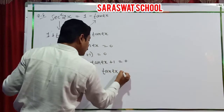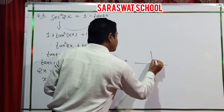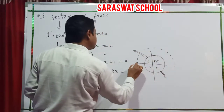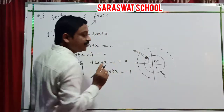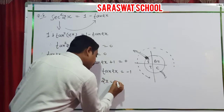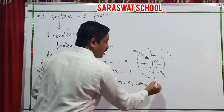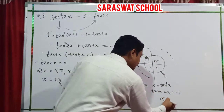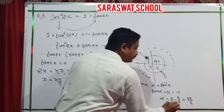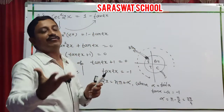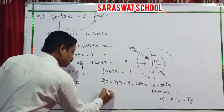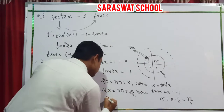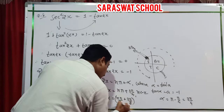For tan x equals minus 1: tan is negative in the second and fourth quadrants. The reference angle is pi by 4 (since tan 45° = 1). In the second quadrant: pi minus pi by 4 gives 3 pi by 4. General solution: 2x equals n pi plus 3 pi by 4. Dividing by 2: x equals n pi by 2 plus 3 pi by 8, n belongs to Z.